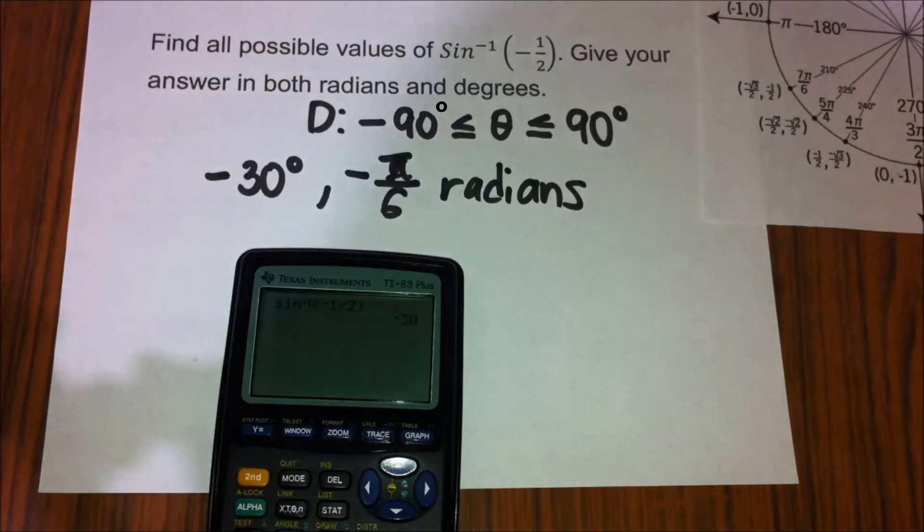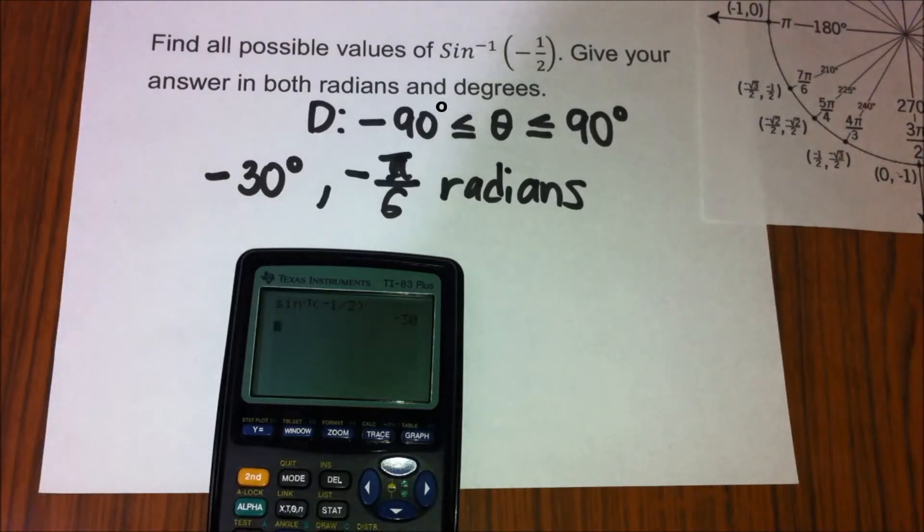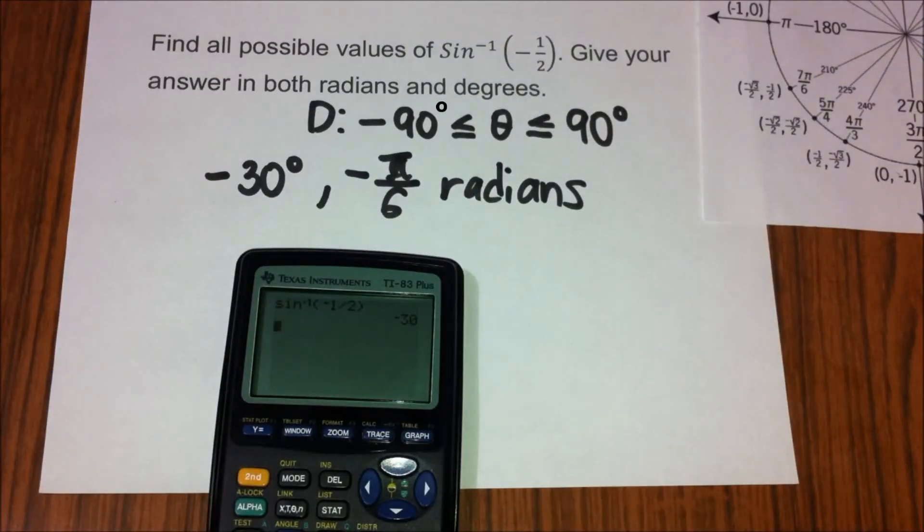Because of the restriction in inverse sine, we only have one possible value. That's negative 30 degrees and negative pi over 6 in terms of radians. Overall, we found the possible values for restricted inverse sine of negative 1 half, and that's it for today.